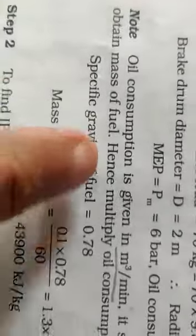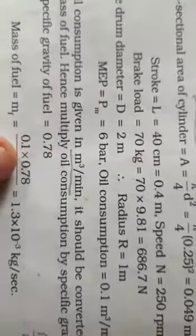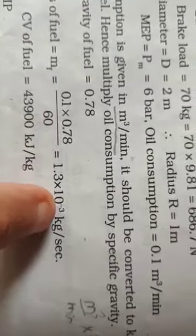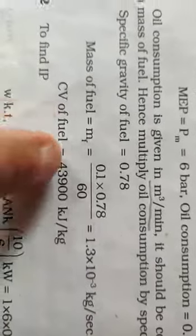Multiply oil consumption by specific gravity. Meter cube per minute into kg per meter cube becomes kg per minute, and if you divide by 60 it becomes kg per second. Specific gravity 0.78. Mass of fuel equals 0.1 into 0.78 divided by 60, which is 1.3 times 10 to the minus 3 kg per second. Calorific value 43,900 kilojoules per kg.